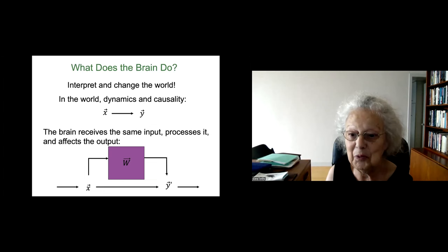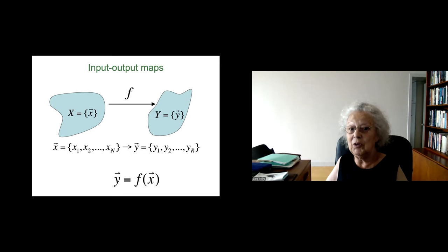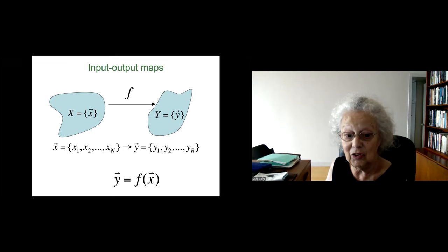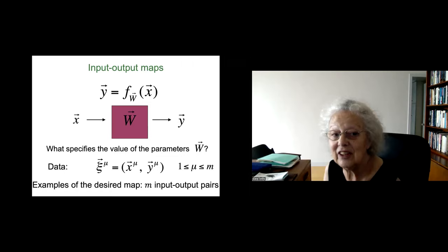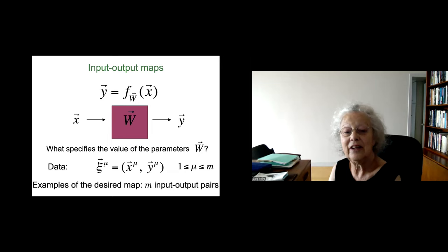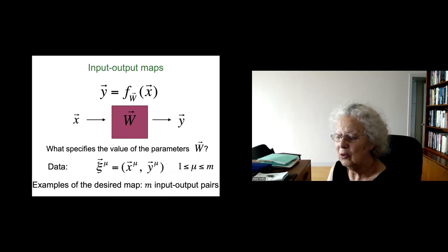Let's frame this conversation in the context of input-output maps executed by a module — this network W, which could be the brain or an artificial neural network. We focus on a function that maps an n-dimensional input x into an r-dimensional output y, implemented by a network characterized by connectivity parameters W. The function connecting x to y is called f sub W, to remind us that the function itself depends on these parameters W. The question is: how do we set the parameters W? That's the question of learning.